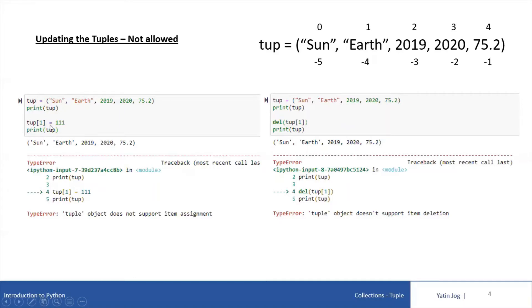But at the time of trying to change the element value which is present at first index, the Python interpreter is going to give an error. What is the error? It is a type error. What is the type error? Tuple object does not support item assignment.